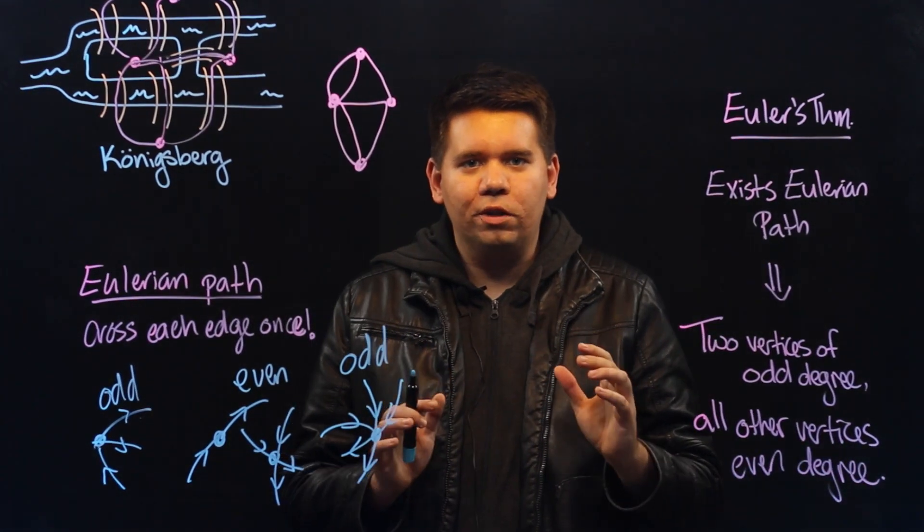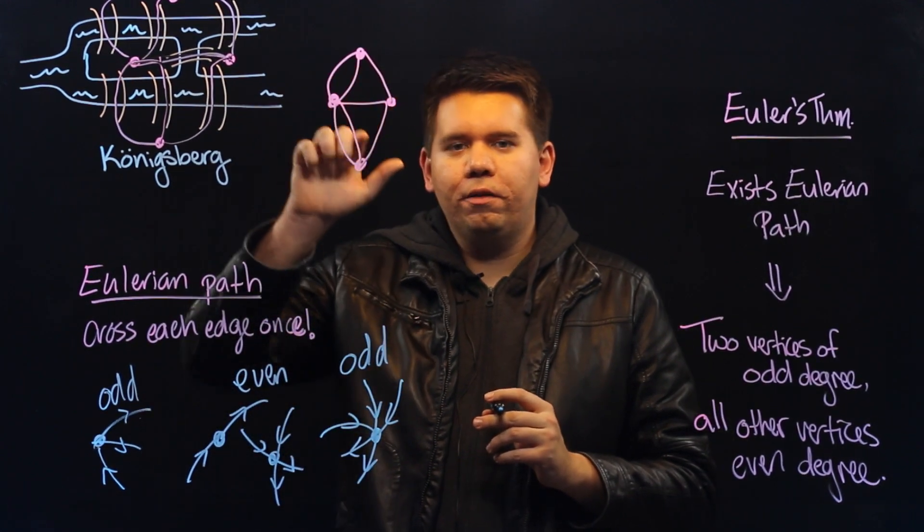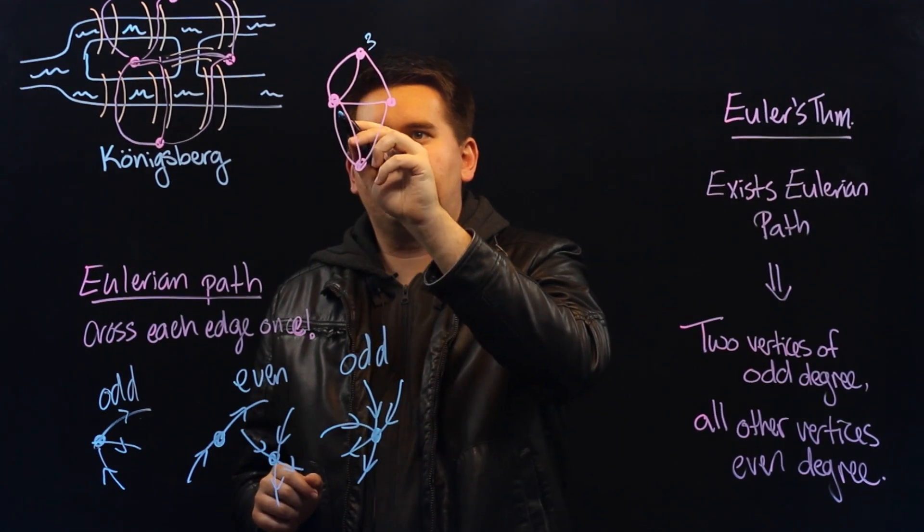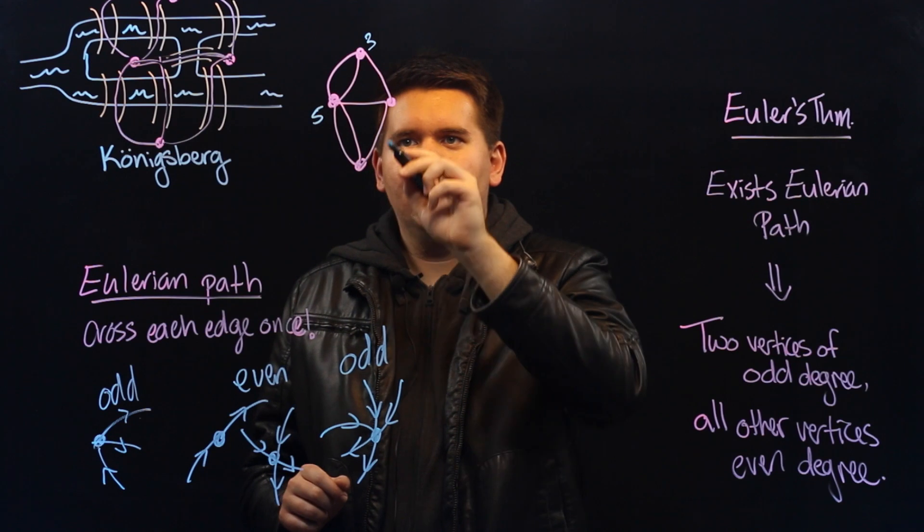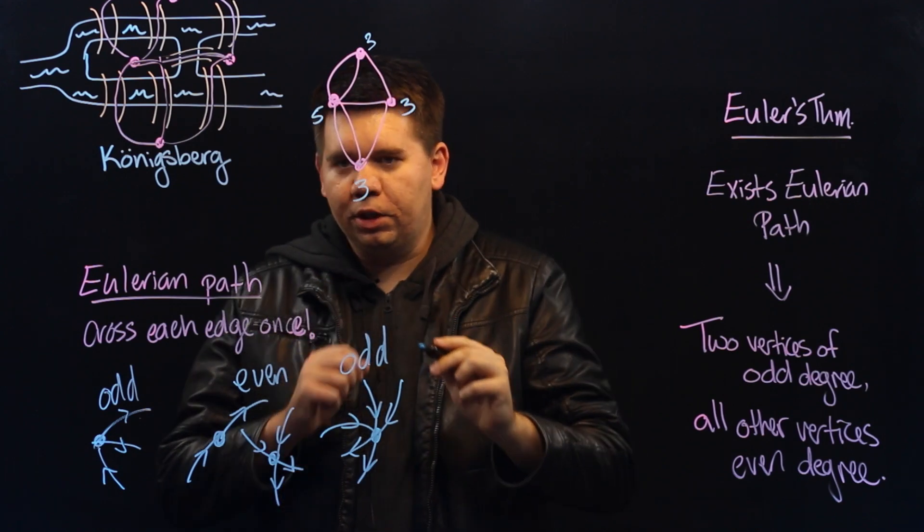This allowed Euler to crack the problem. Let's look at it again. We have four vertices. The first one is degree three. The second one is degree one, two, three, four, five, degree five. The next one is degree three. And the last one is degree three.